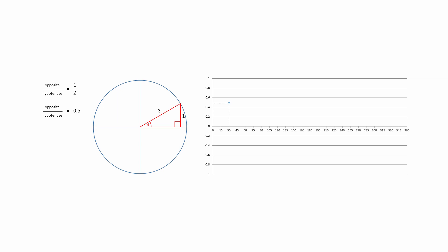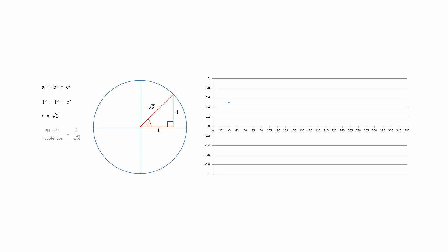Here it is plotted on the graph. For an angle of 45 degrees, we can discover the ratio we're looking for using Pythagoras' theorem. We'll re-label the sides of this triangle A, B and C. Pythagoras tells us that A squared plus B squared equals C squared. Because the angle theta is 45 degrees, we can see that A and B have the same length — let's call this one unit of length. Hence, C is the square root of 2. So for an angle of 45 degrees, the ratio of the opposite side to the hypotenuse is 1 over root 2, which works out to be about 0.707.